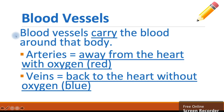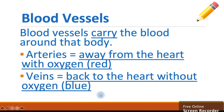First up we have blood vessels. These carry blood around the body with two main types: arteries and veins. Arteries carry oxygenated blood away from the heart towards the body — they are represented in red. Veins carry deoxygenated blood from the body back to the heart and they are often represented in blue.